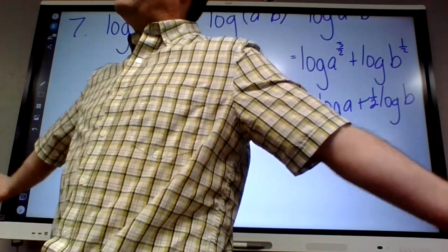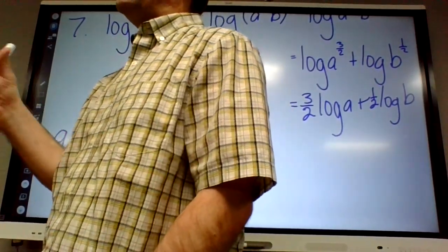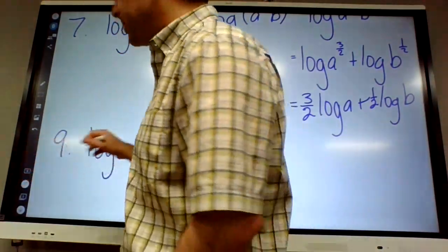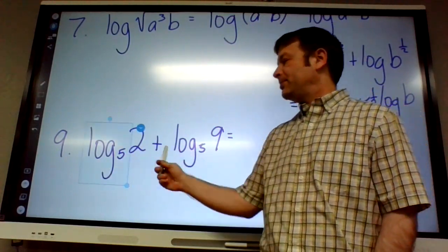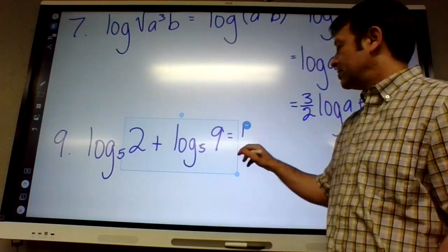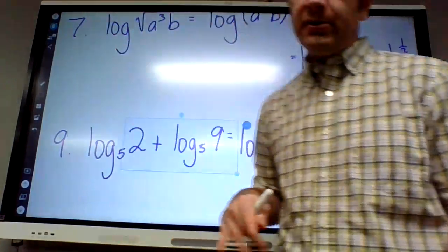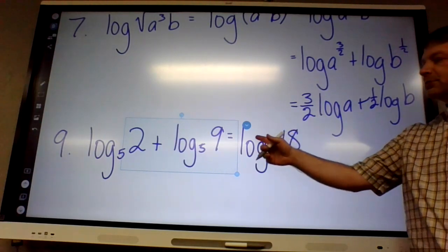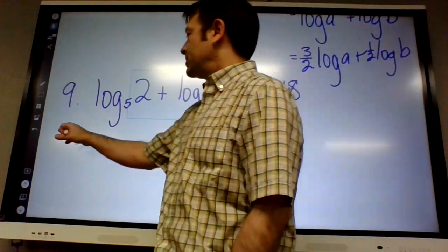Number nine is the opposite: they're broken apart and we're supposed to put them back together again. These tricks only work when you have the same base, but the base is going to stay the same on our answer too. Log base 5 of 2 plus log base 5 of 9. When we're adding the logs together with the same base, what can we do with the numbers? Multiply. So 2 times 9 is 18. This is log base 5 of 18.